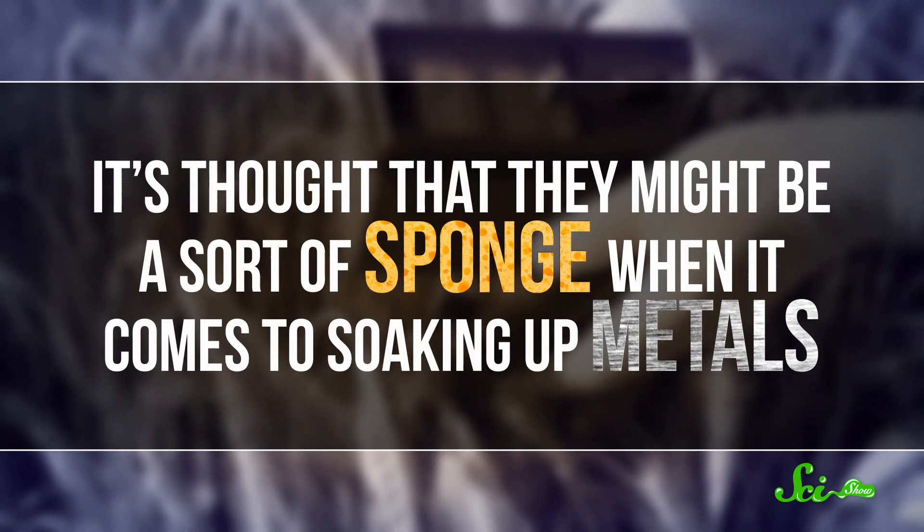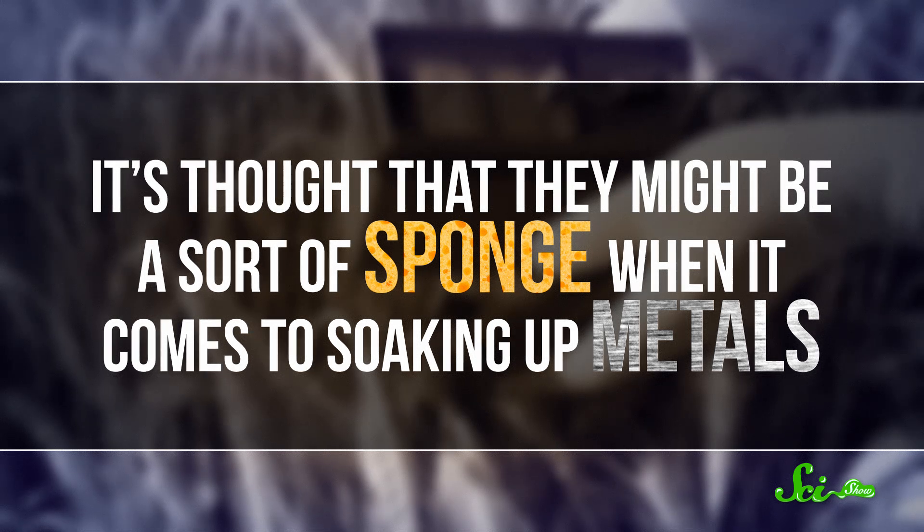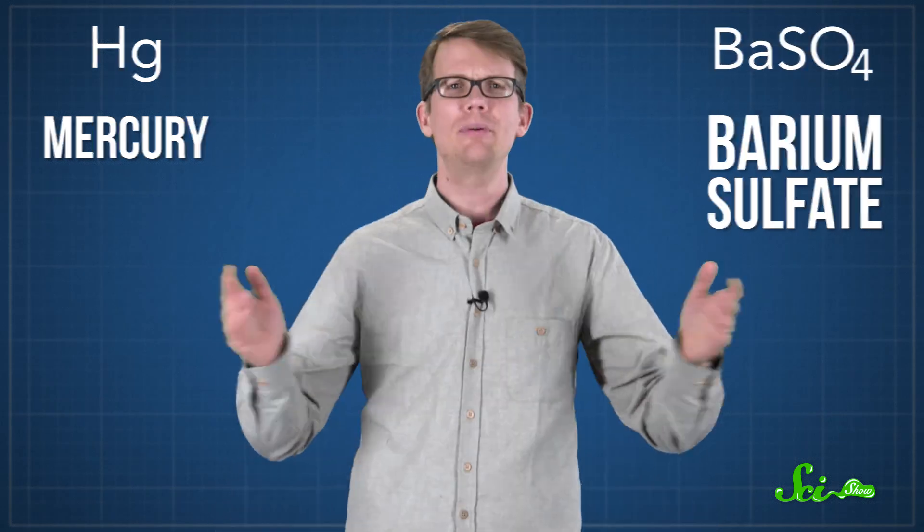but it's thought that they might be a sort of sponge when it comes to soaking up metals. That might also explain the equally unusual levels of mercury and barium sulfate in their shells. But scientists are still pretty confused about how and why they absorb all this stuff.